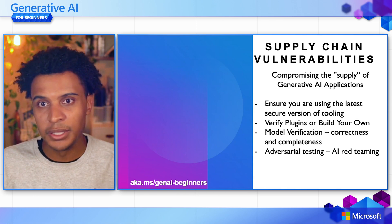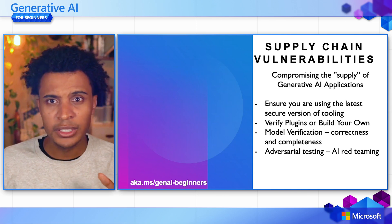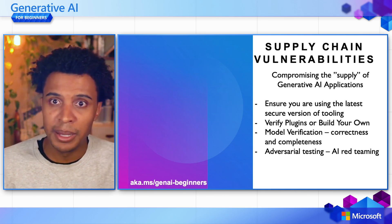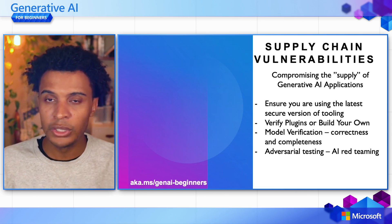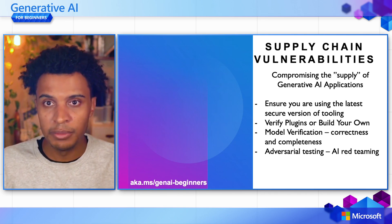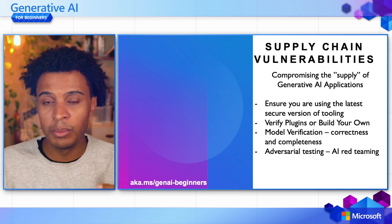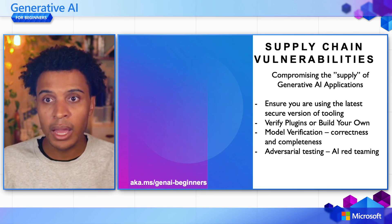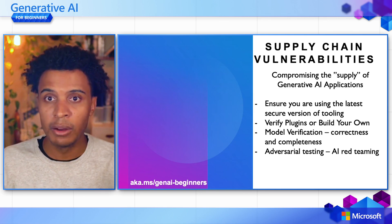For supply chain vulnerabilities, always ensure you're using the latest secure version — not just the latest version, as the newest isn't always the most secure. Verify the plugins you're using, or build your own plugins if necessary. Verify the model for correctness and completeness. Finally, use adversarial testing through AI red teaming — creating challenging scenarios to find vulnerabilities in your applications and identifying areas for improvement.